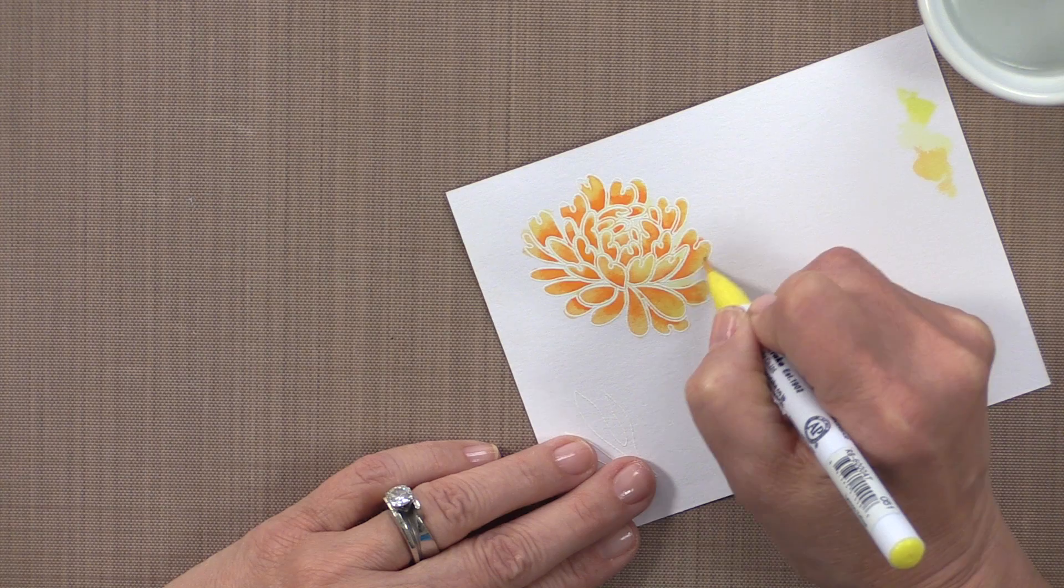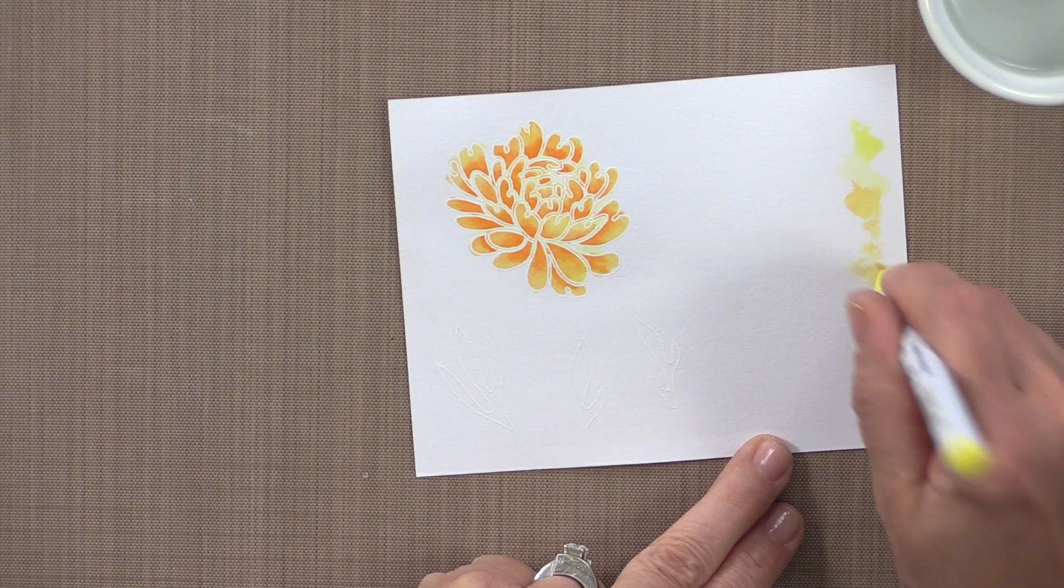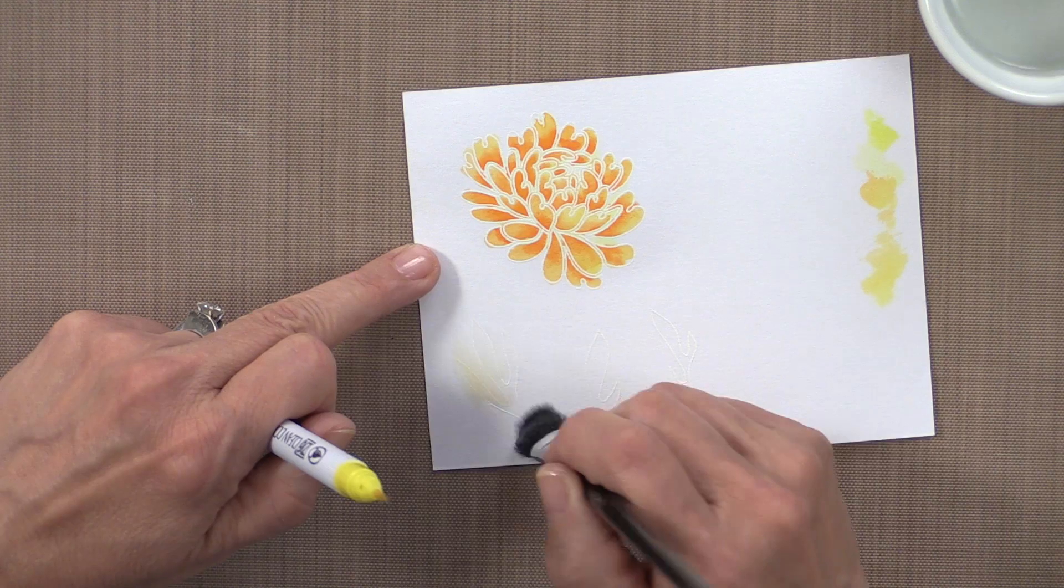So you can see I'm continuing to add color around the edges and that is the way the flower looks when it's done. Now you can get real brave and add a third color. You could go back and add a little vibrant red way down near the bottom of each petal and then bring that out with a little bit of orange and then bring that out with a little bit of yellow.